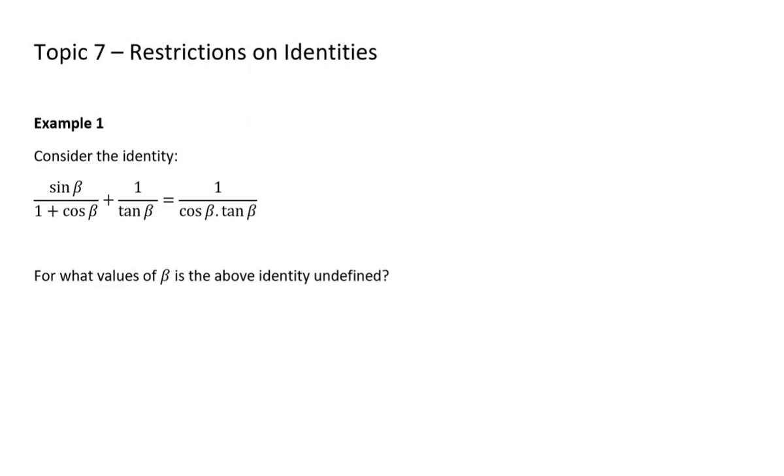So example 1 says consider the identity. Now generally in an exam they like to ask you to prove the identity, and then the second question will say for what values of beta is this identity undefined? Or it might say for what values of beta does this identity not hold? Now when would an identity not hold? The only reason identity would not hold is if one of the parts is undefined. And what makes something undefined?